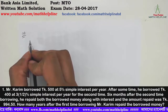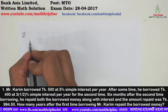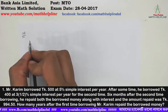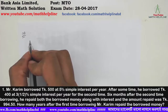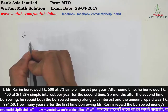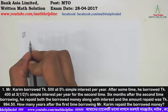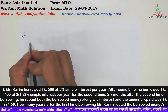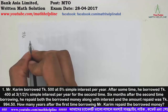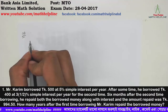How many years after the first time borrowing did Mr. Corrie repay the borrowed money? This involves the 5% simple interest rate and 3.5% simple interest rate.